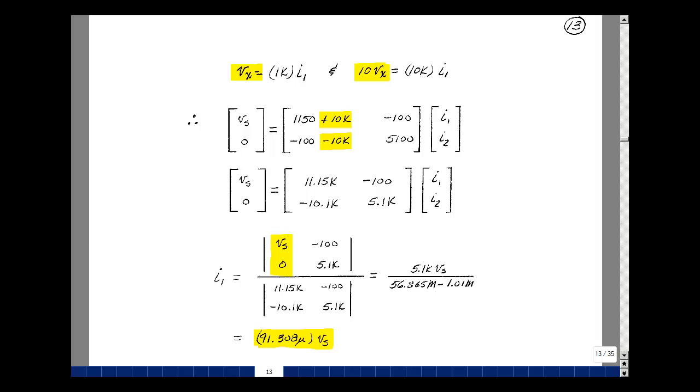Let's solve for I1. Bring this over into column 1. This times this is V sub S times 5.1K minus 0. And then divided by the determinant of our resistive matrix. So the determinant of this then is this times this minus this times this. This product is 56.865 million. And then I've got three minus signs here, so I've got one left over. 1.01 million is the product.